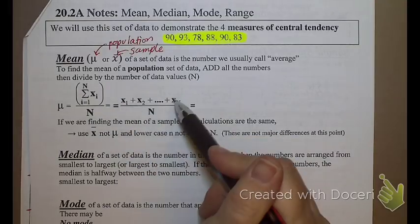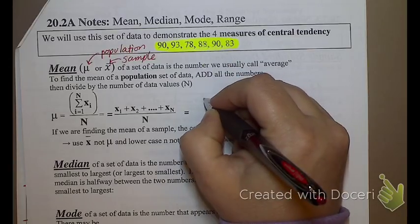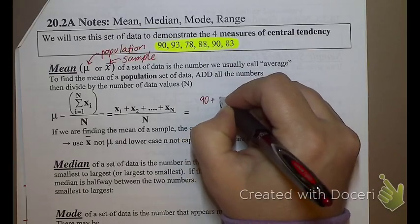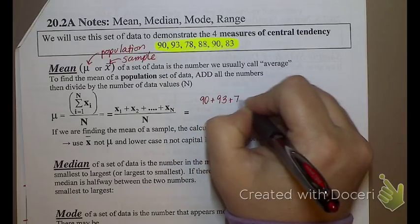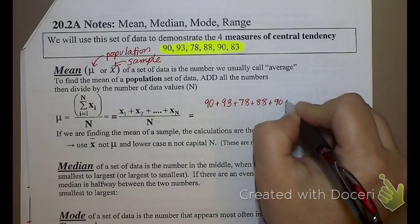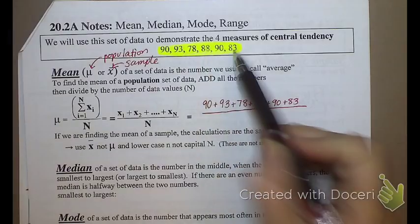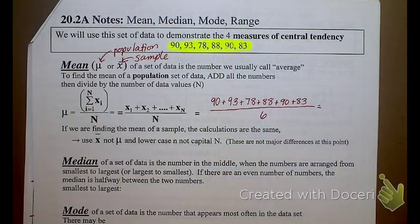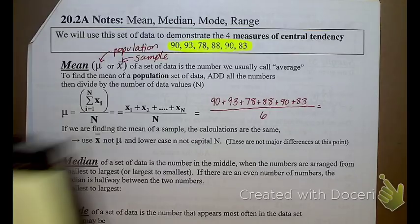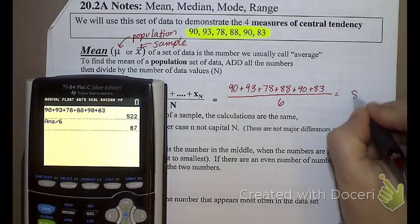It goes on further to explain it in a slightly different way. So if I wanted to find the mean of this information, what would I do? I would take 90 plus 93 plus 78 plus 88 plus 90 plus 83, and I would divide by what? 1, 2, 3, 4, 5, 6, and let's see what that gives me on my calculator. 90 plus 93 plus 78 plus 88 plus 90 plus 83, divided by 6. My mean is 87.